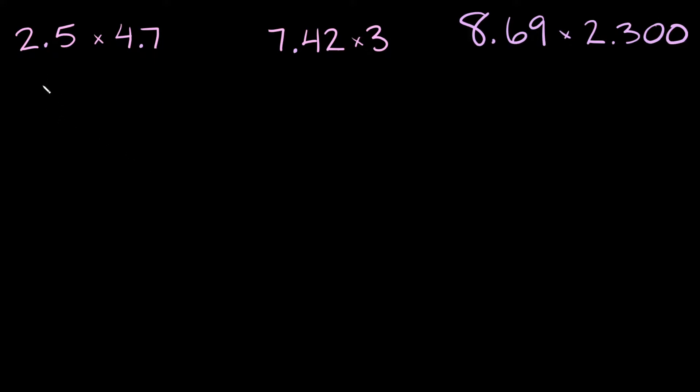So let's start with this first example up here on the left. Here I have 2.5 times 4.7. So when you're multiplying decimals you don't actually even need the decimal to multiply them together. I'm just going to ignore the decimals for now and then I'm just going to multiply these numbers like normal.